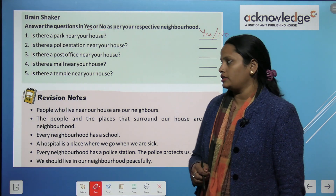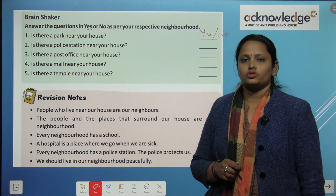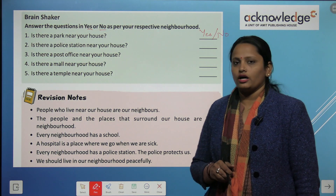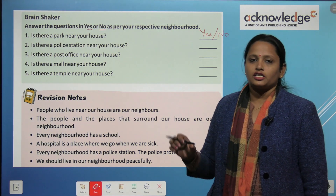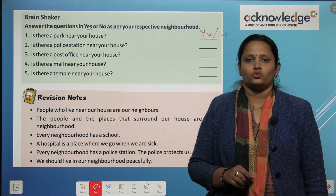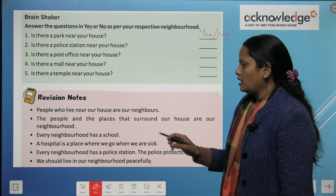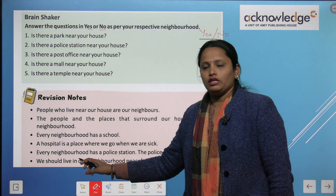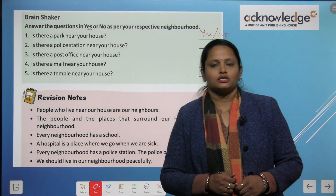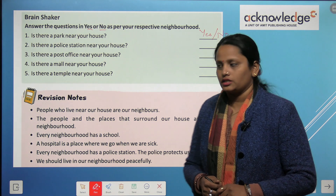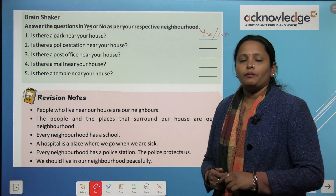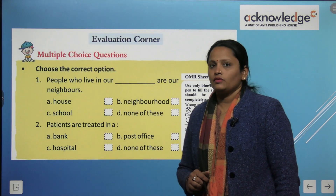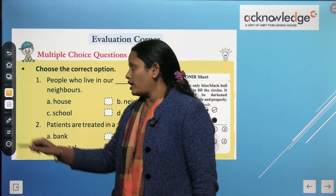Let's review what we have learned in this chapter. People who live near our house are our neighbors. The people and the places that surround our house are called the neighborhood. Every neighborhood has a school. A hospital is a place where we go when we are sick. We should live in our neighborhood peacefully.